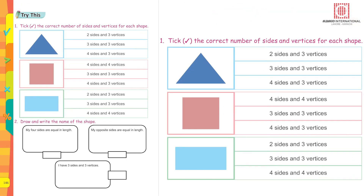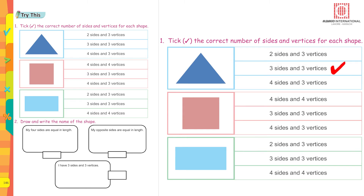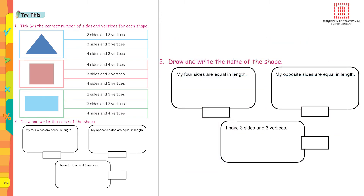Take the correct number of sides and vertices for each shape. For a triangle: is it 2 sides and 3 vertices, 3 sides and 3 vertices, or 4 sides and 3 vertices? Yes, exactly — 3 sides and 3 vertices.